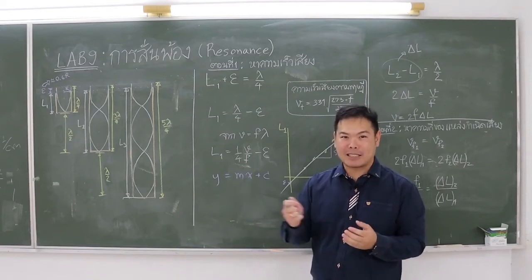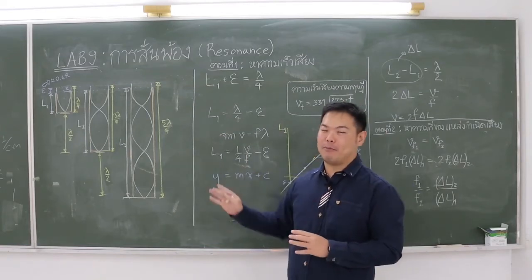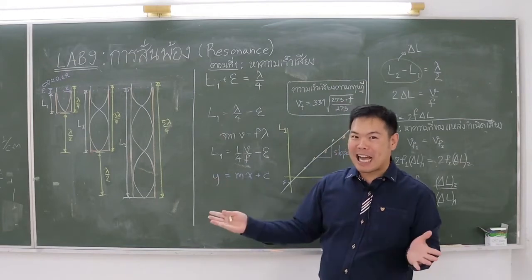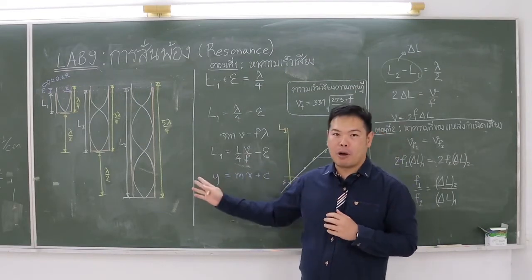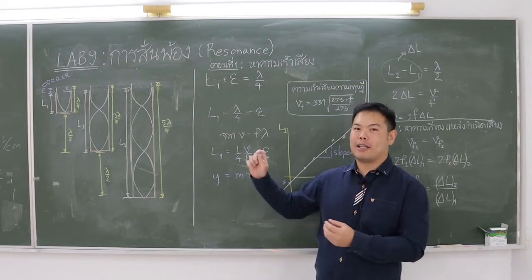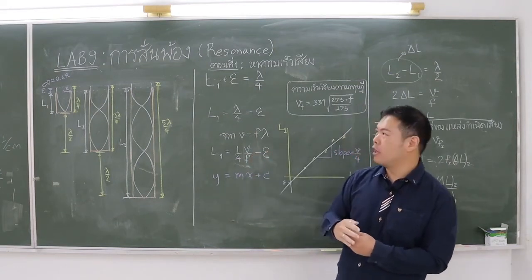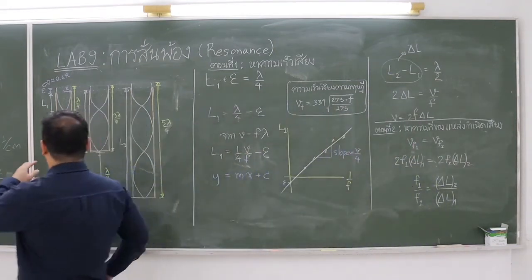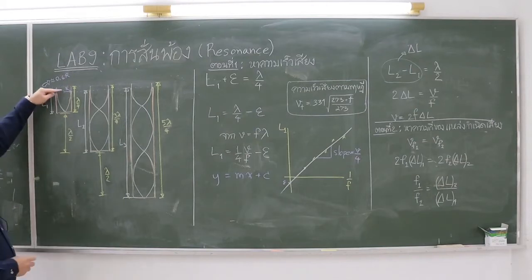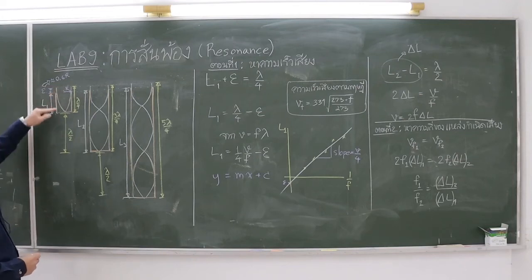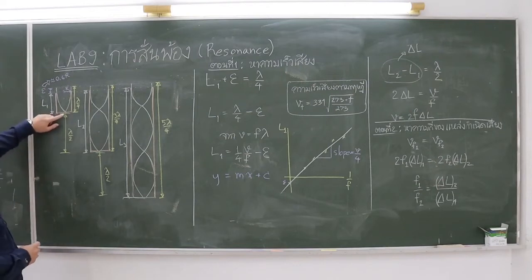In this experiment, however, we are not using a swing to show resonance. Instead, we use sound, which is the oscillation of the flow and pressure of the air. Considering a tube with one end open: the air around the open end can move up and down, while the air at the other end cannot move. This forces the sound wave in the tube to occur at certain wavelengths only, and those wavelengths are controlled by the length of the tube.